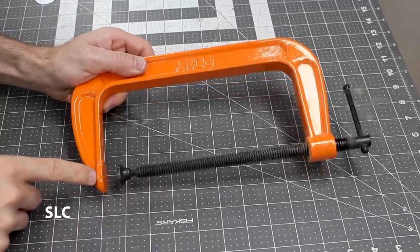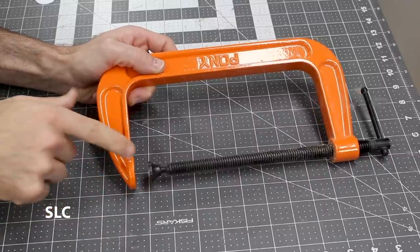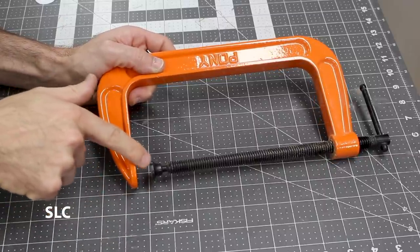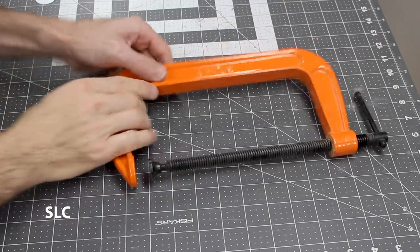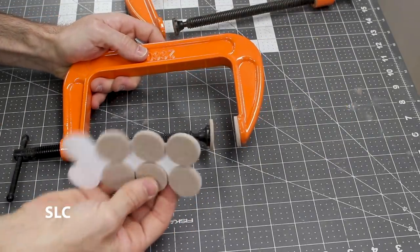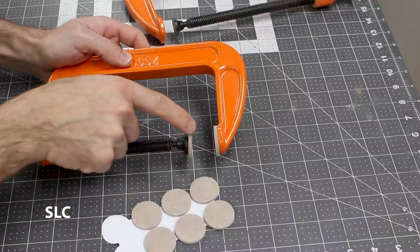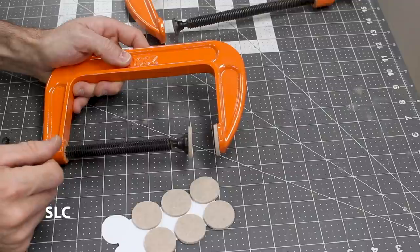Now if you're trying to clamp something tight together, you can definitely count on a C clamp. The only downside is there's a good chance you're going to scar up whatever you're trying to clamp together in these jaws. That is unless you get some felt pads. By adding these thick felt pads to right where the clamping pressure is, there's much less likely you will scar up whatever you're clamping together.